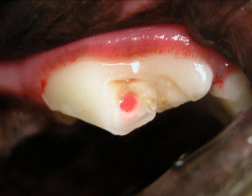Here is a picture of a fractured premolar tooth in a dog. The pink spot in the middle is the root canal or nerve. This is a very painful problem for the pet.